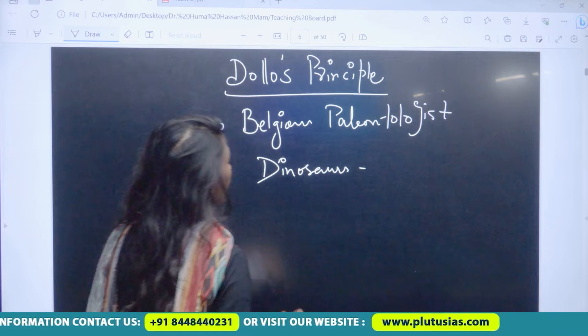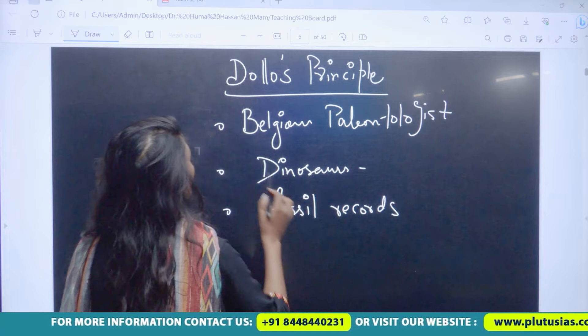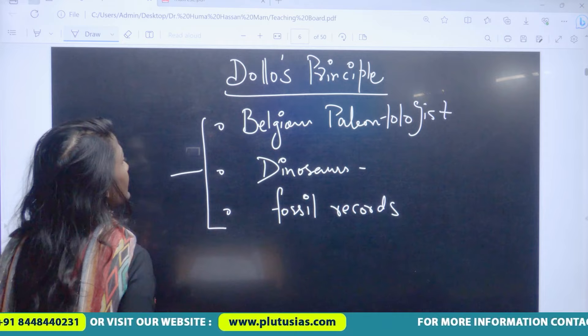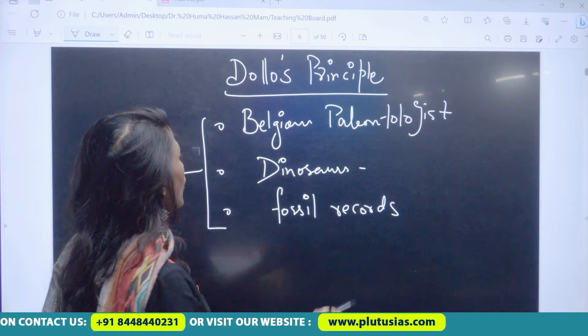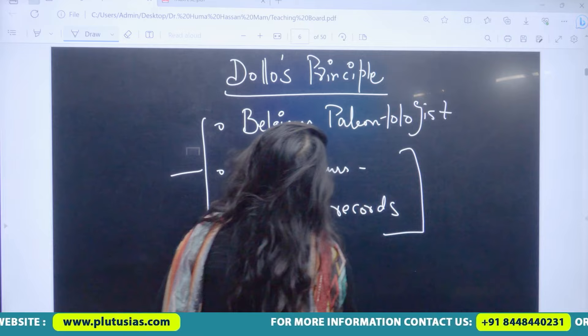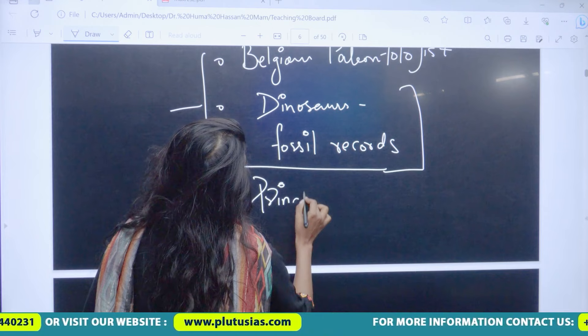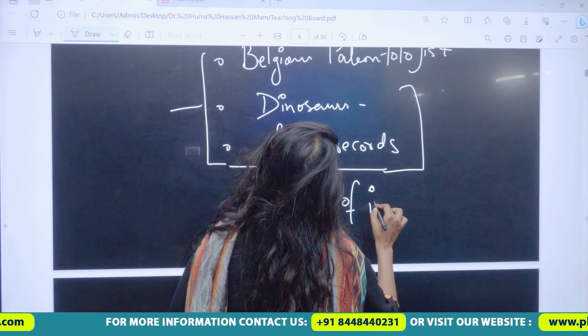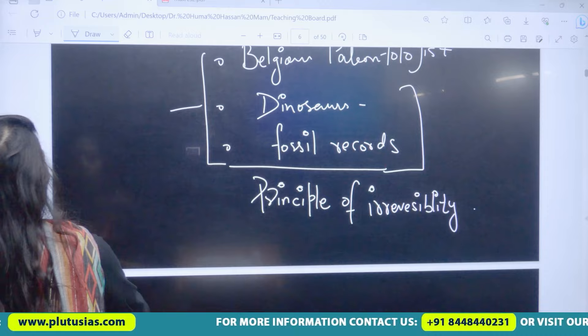On his observation of fossil records, he proposed a very dynamic concept — the Principle of Irreversibility, or Dollo's Law of Irreversibility.